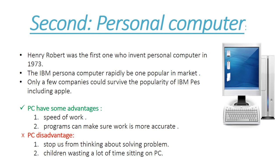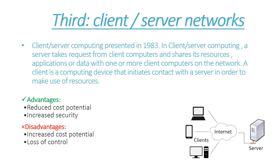Secondly, personal computers. Henry Roberts was the first to invent the personal computer in 1973. IBM invented computers to be suitable for everyone — at the office, university, or even home. The IBM personal computer rapidly became popular in the market, with only a few companies surviving its popularity, including Apple. Personal computers have advantages like speed and accuracy, but disadvantages like reducing independent thinking, and children and adults can spend too much time on laptops.